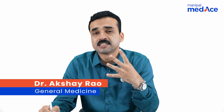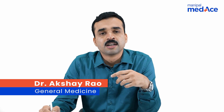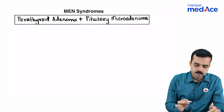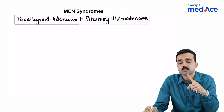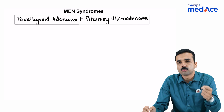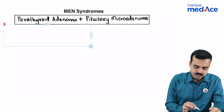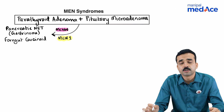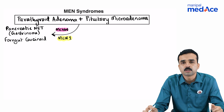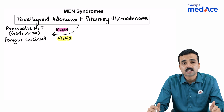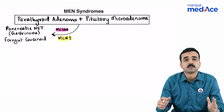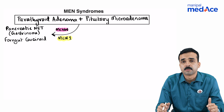Students, remember there are four MEN syndromes. Whenever you see a combination of parathyroid adenoma along with pituitary microadenoma, think of either MEN1 or MEN4. MEN1 is more likely if this combination exists along with a pancreatic neuroendocrine tumor, most commonly a gastrinoma. An associated tumor in MEN1 is foregut carcinoid. MEN1 occurs due to a mutation in the menin gene, which is present on chromosome number 11.